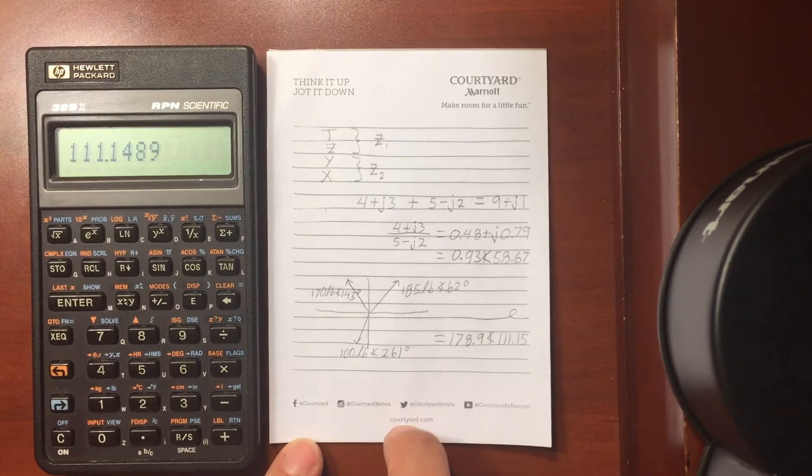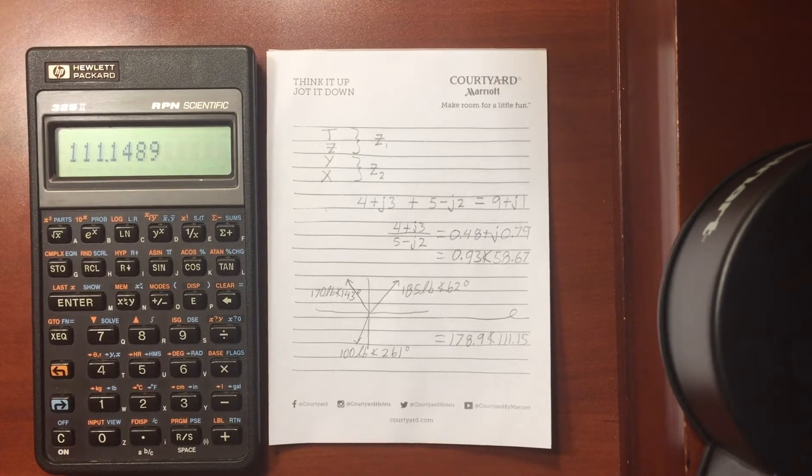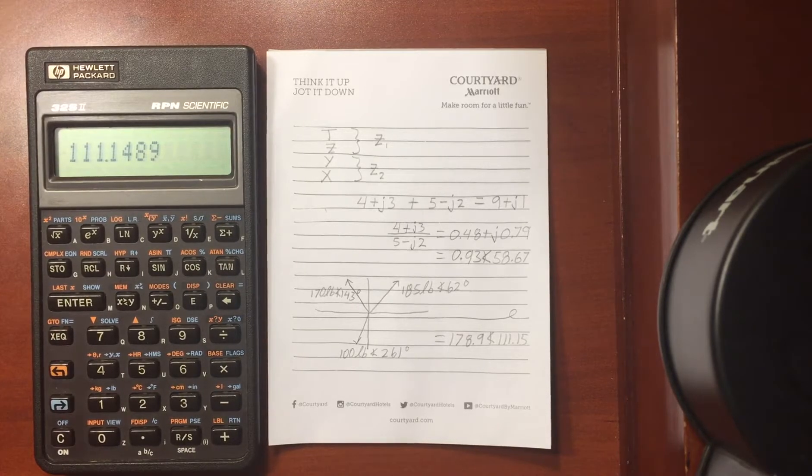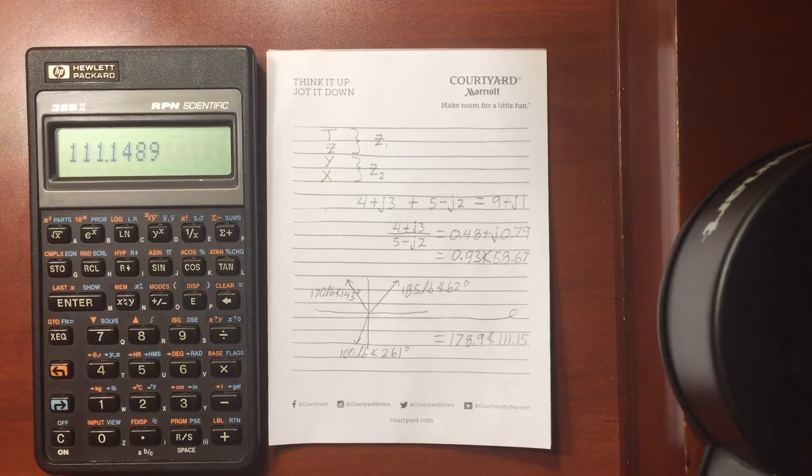So that's how you do complex numbers. Again, it's just a little arduous. I wish you could see both real and imaginary portion on the same line. I wish you could convert to polar without having to go through converting it to rectangular. But that's the way it is, and it works.